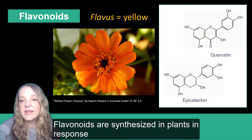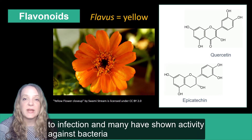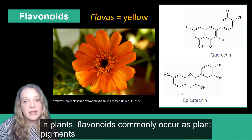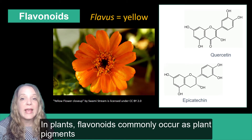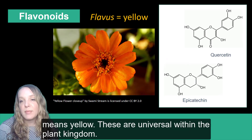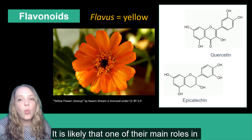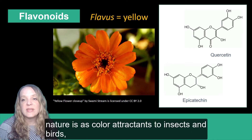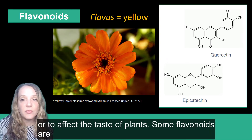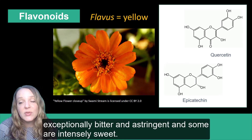Flavonoids are synthesized in plants in response to infection and many have shown activity against bacteria and viruses including HIV and RSV. In plants, flavonoids commonly occur as plant pigments, often yellow or orange — and flavus means yellow. These are universal within the plant kingdom. It is likely that one of their main roles in nature is as color attractants to insects and birds, or to affect the taste of plants.